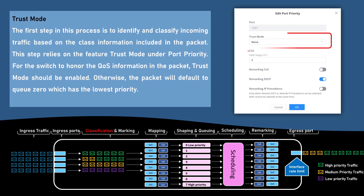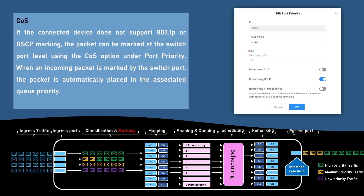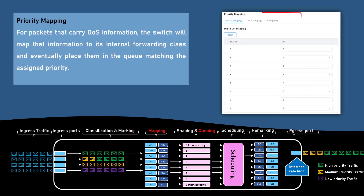This graph summarizes the quality of service process in the GWN switches. The first step is to identify and classify incoming traffic based on the class information included in the packet. This step relies on the trust mode feature under port priority. For the switch to honor the QoS information in the packet, trust mode should be enabled; otherwise, the packet will default to internal class 0, which has the lowest priority. If the connected device does not support CoS or DSCP, the packet can be marked at the switch port level using the CoS option under port priority. When an incoming packet is marked by the switch port, it is automatically placed in the associated queue priority. For packets that carry QoS information, the switch will map that information to its internal forwarding class and eventually place them in the matching queue priority.